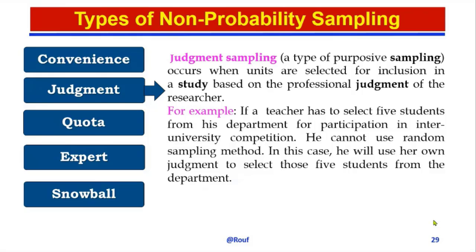For example, if a teacher has to select five students from his department for participation in an inter-university competition, he cannot use a random sampling method. In this case, he will use his own judgment to select those five students from the department. This is called judgmental sampling.